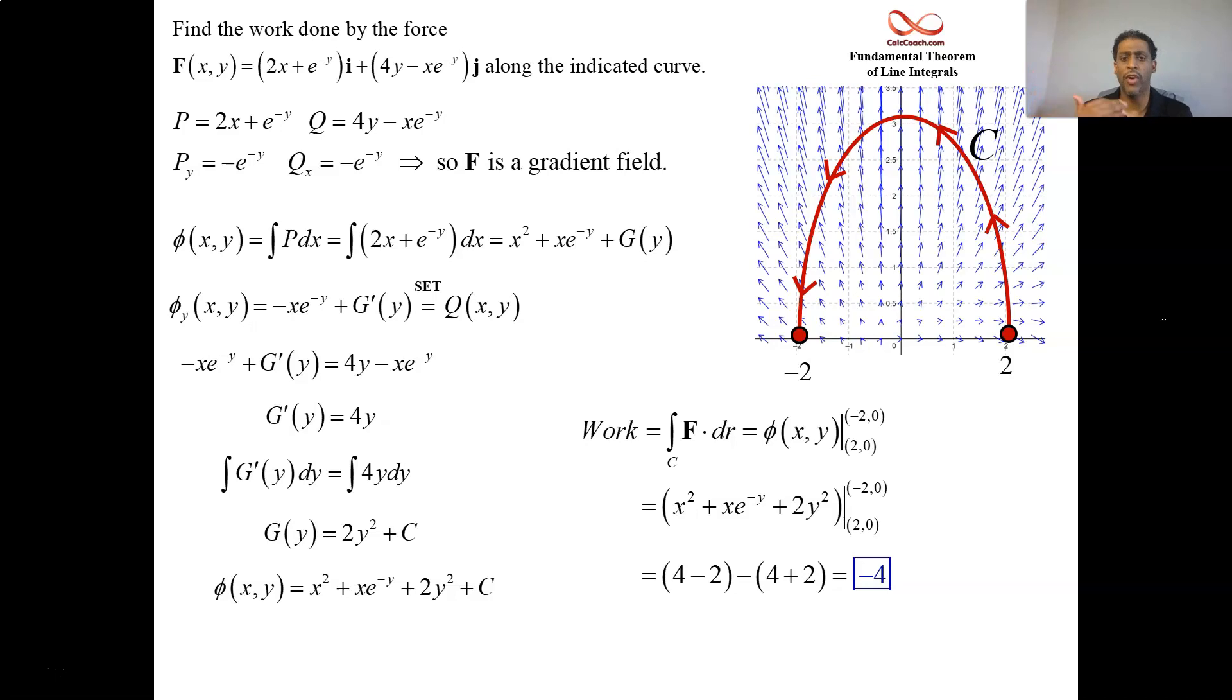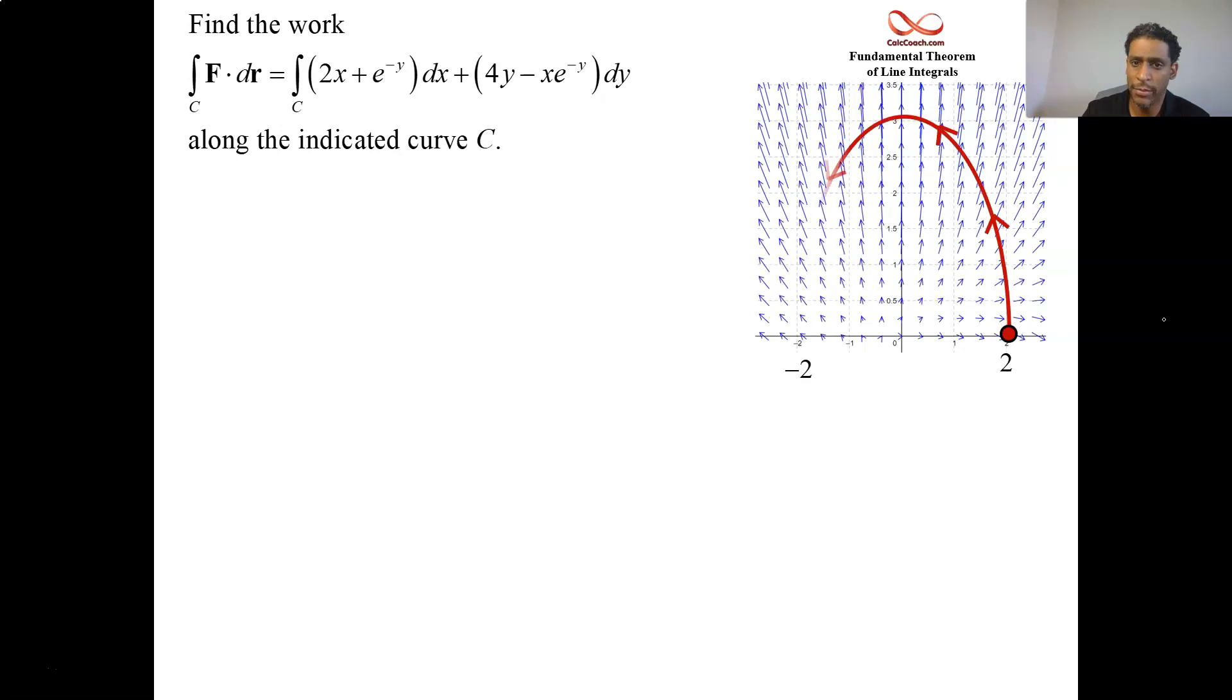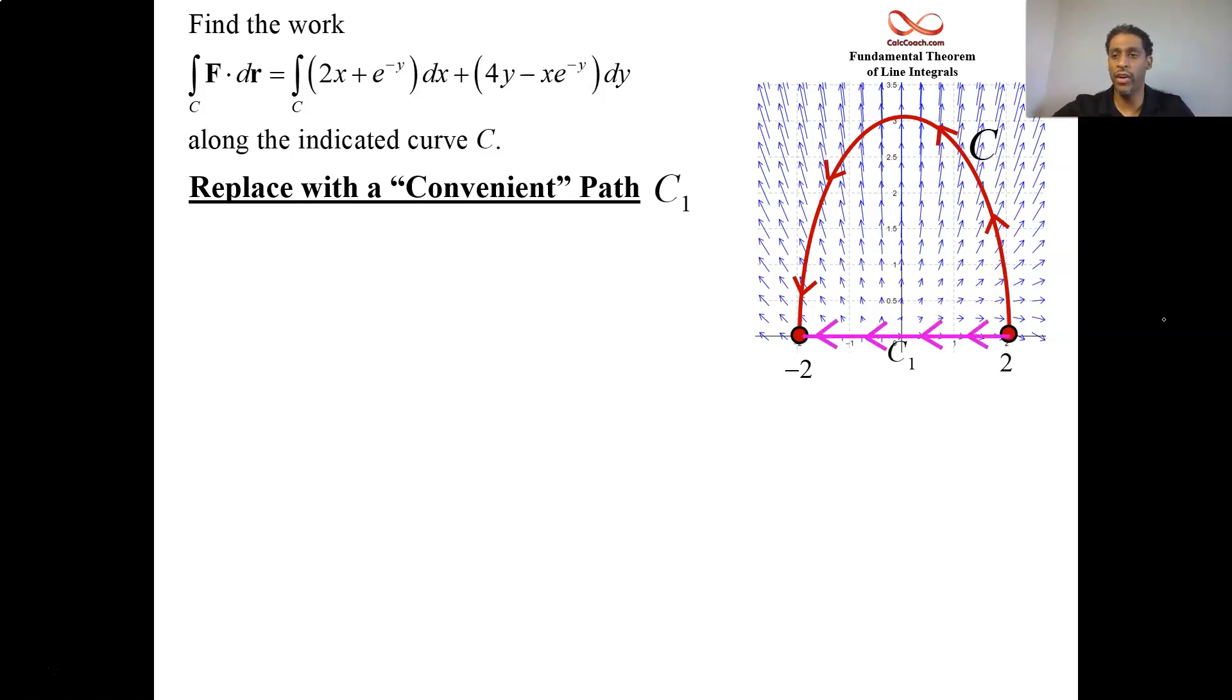So that's two ways to do it where you go find the φ, where you employ the fundamental theorem of line integrals. But you have another option. You were given this along that curve. But we could, since it's independent of path, we could pick another curve. We could pick a more convenient path. We could pick a path that goes directly along the x-axis.